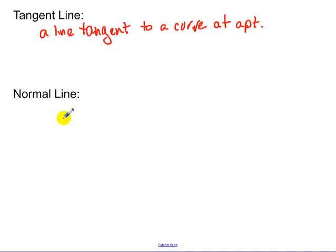So a tangent line is a line tangent to a curve at the point. So a normal line is a line perpendicular to our tangent line.